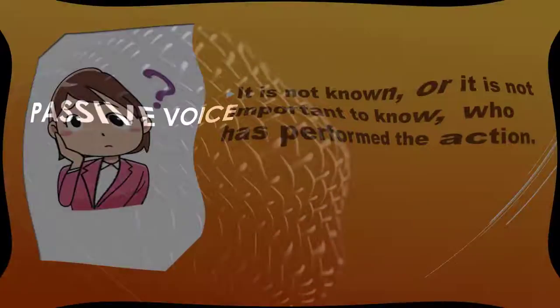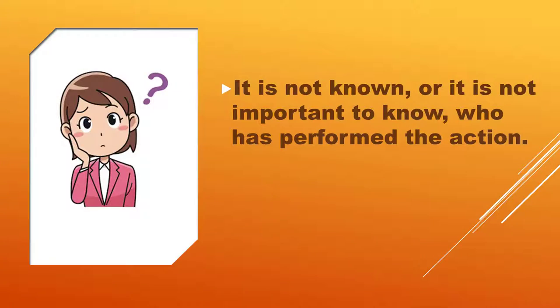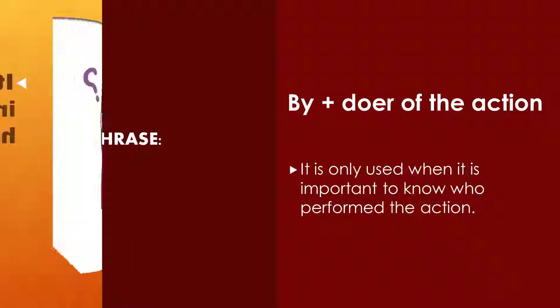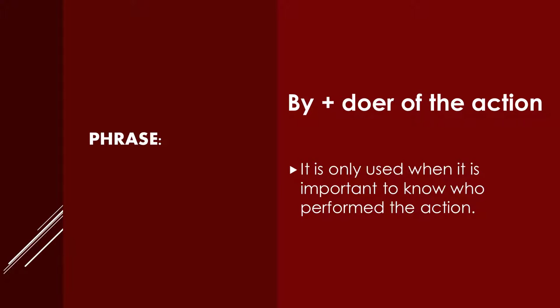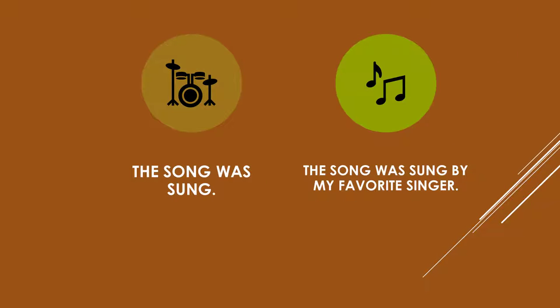The passive is most often used when it is not known, or it is not important to know, who performed the action. The phrase 'by' plus the doer of the action is only used when it is important to know who performed the action. For example: 'The song was sung' versus 'The song was sung by my favourite singer.'